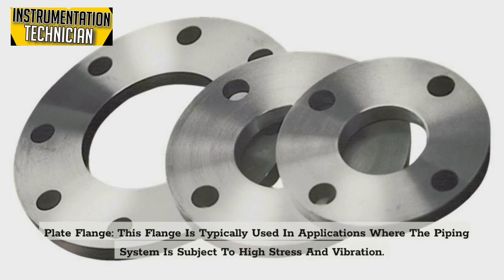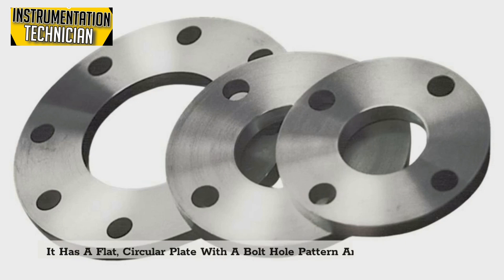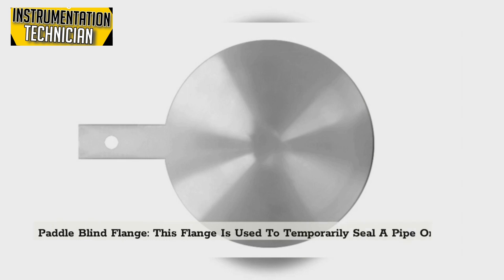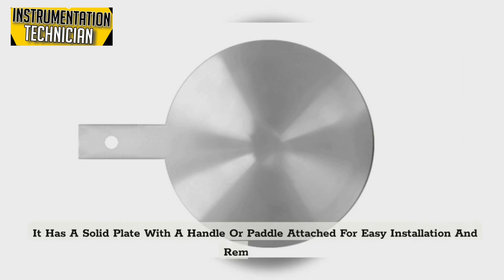The plate flange has a flat circular plate with a bolt hole pattern around the perimeter. Paddle blind flange: This flange is used to temporarily seal a pipe or vessel during maintenance or repair work. It has a solid plate with a handle or paddle attached for easy installation and removal.